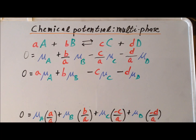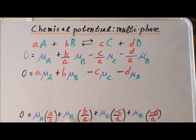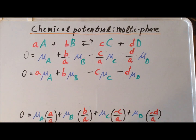Next, we multiply each side by a, and the effect of this is to clear out the fractions. So now we have integer coefficients for each of the chemical potential terms at equilibrium.